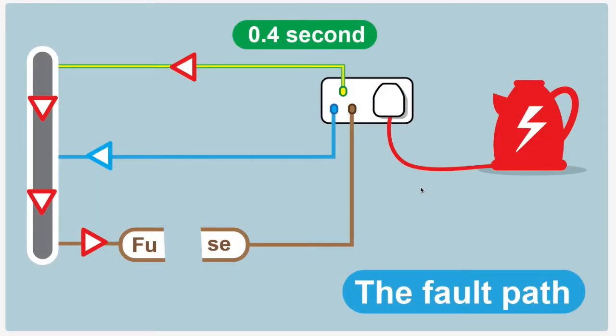Here we have a situation where there is a fault. The kettle's become live—the line conductor is touching the outer case of the kettle, making it live. If you touch that, you get a shock. This is where the protective conductor we mentioned before comes in.